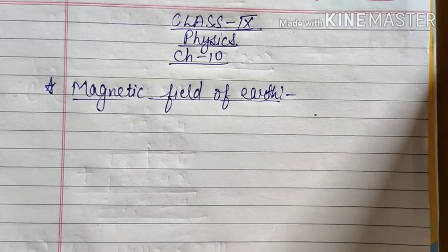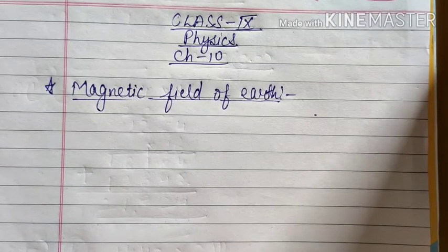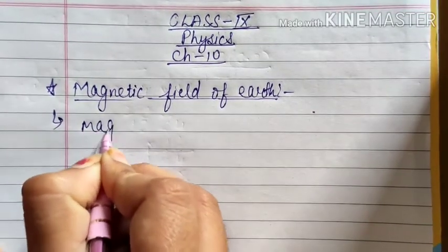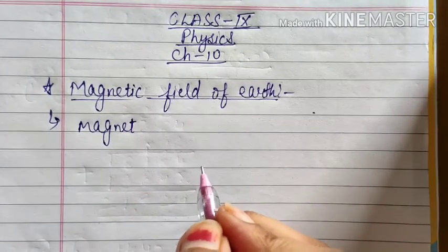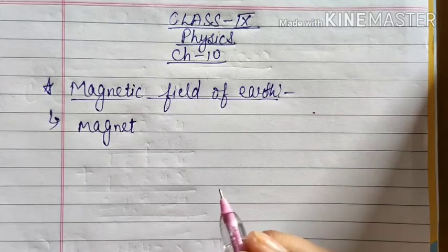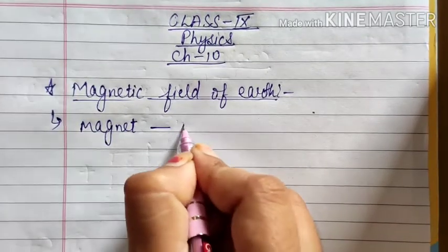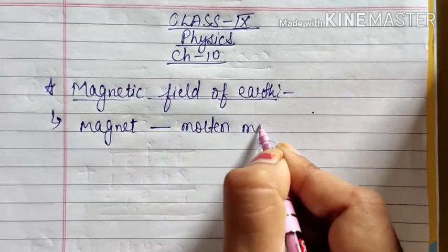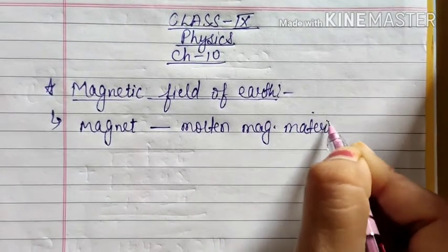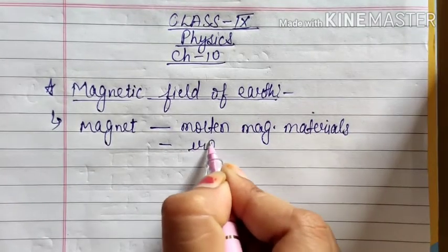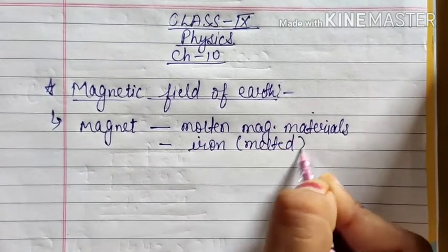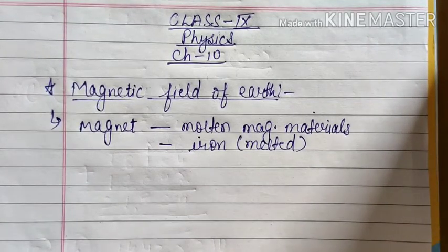Now we will see that the earth behaves as a magnet. Earth itself behaves as a magnet and we will discuss some proofs regarding that. The earth behaves as a magnet just like a large, huge bar magnet is placed inside the earth's crust, but really it is not so. The earth behaves as a magnet due to molten magnetic materials — mainly iron — present in melted form in a large amount under the earth's crust, and because of that magnetism the earth shows magnetic properties.